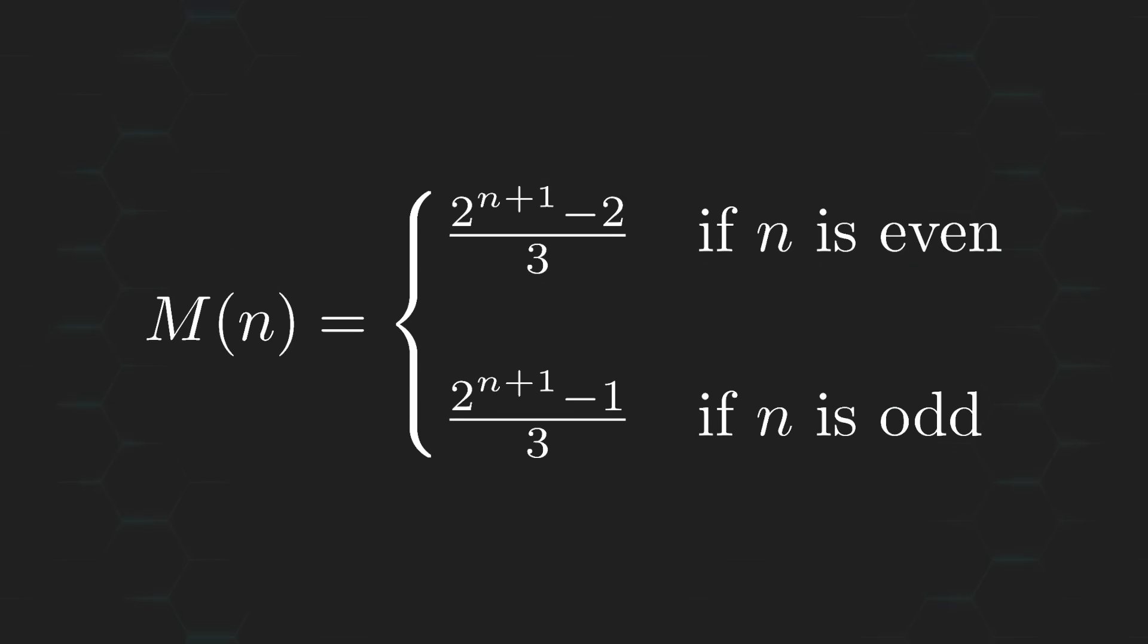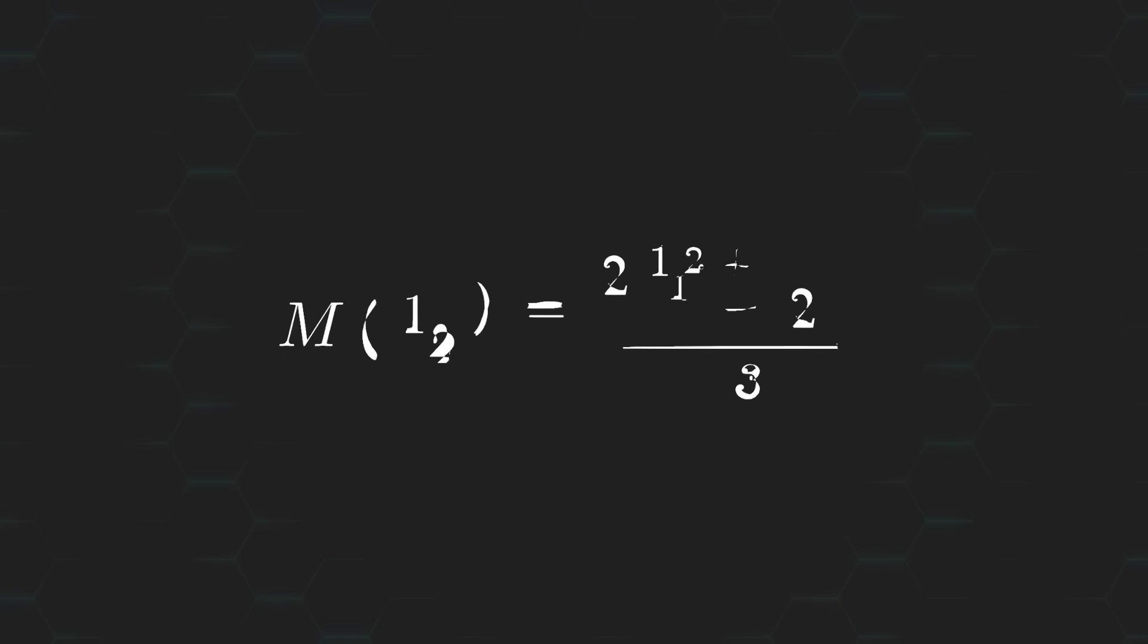All right, here's the moment of truth. We can now plug 12 into this and see that the minimum number of moves needed to solve the puzzle and save Christmas is 2730.